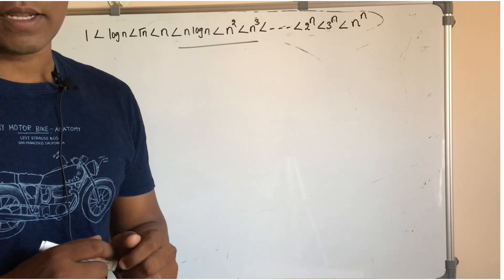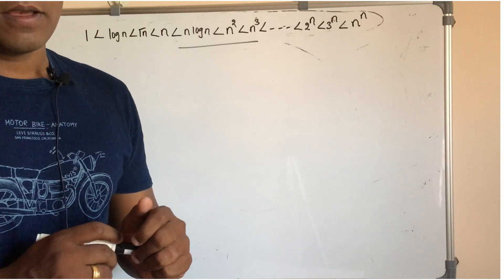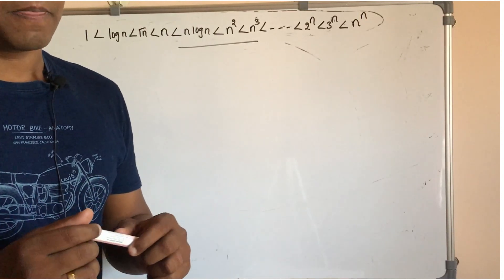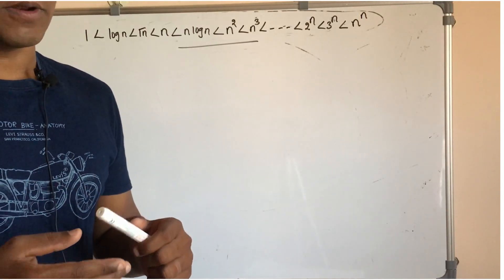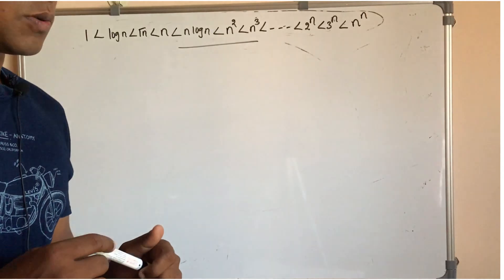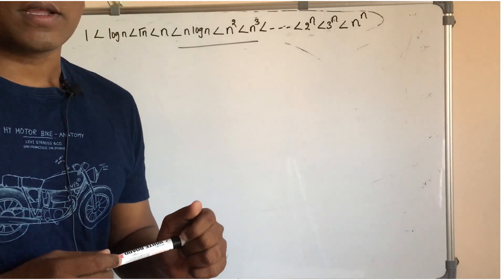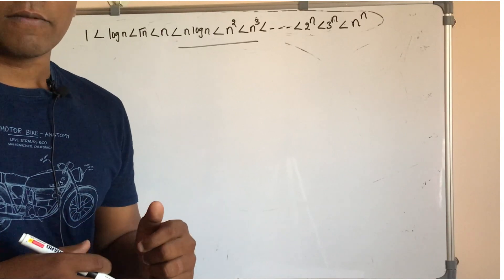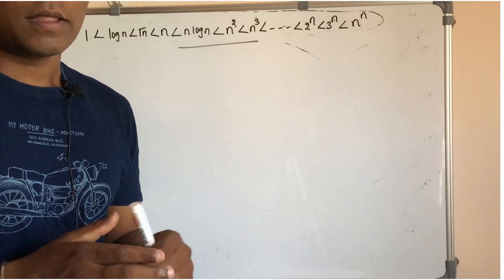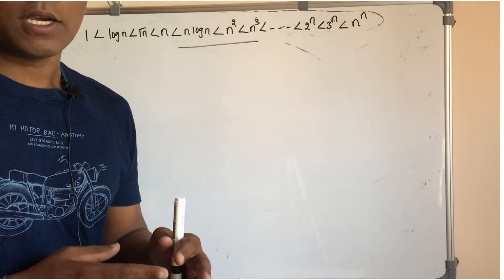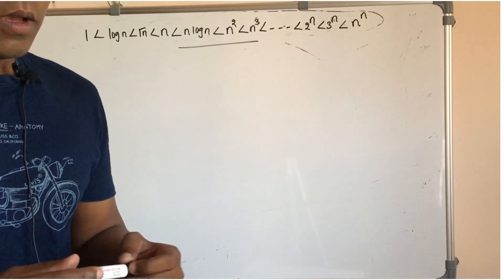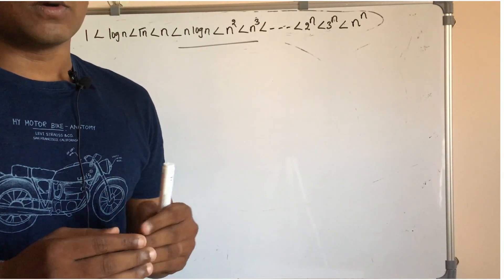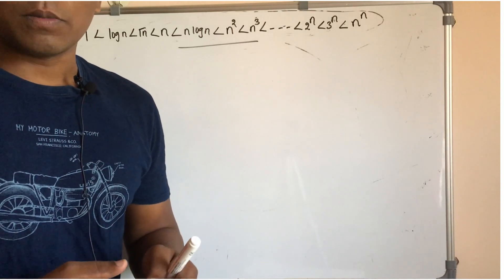We are going to explain a few steps to the notation. If you know the algorithm, it is a set of instructions. We will generate 100 inputs and generate 1000 inputs.